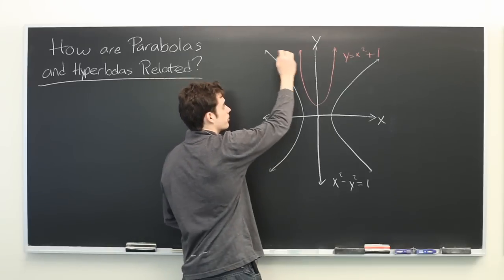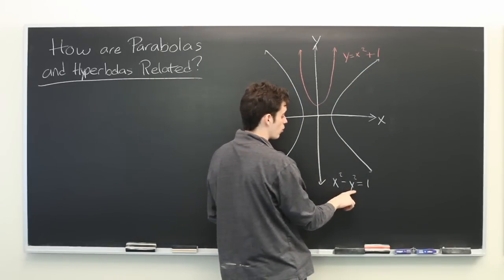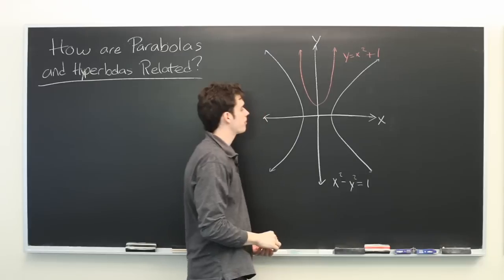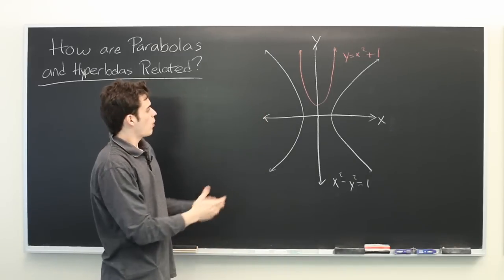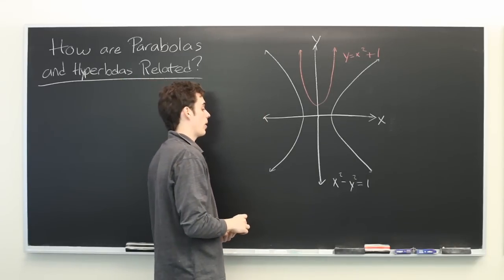The two blue curves are generated by this equation x squared minus y squared equals 1. And while they are both curves, it might not appear that they are related in any interesting way.